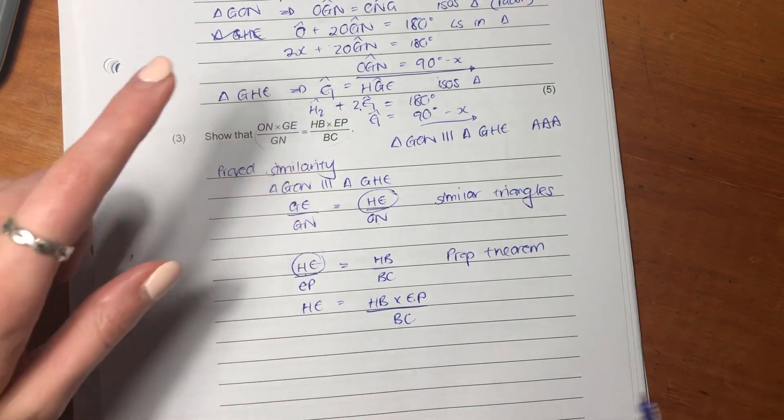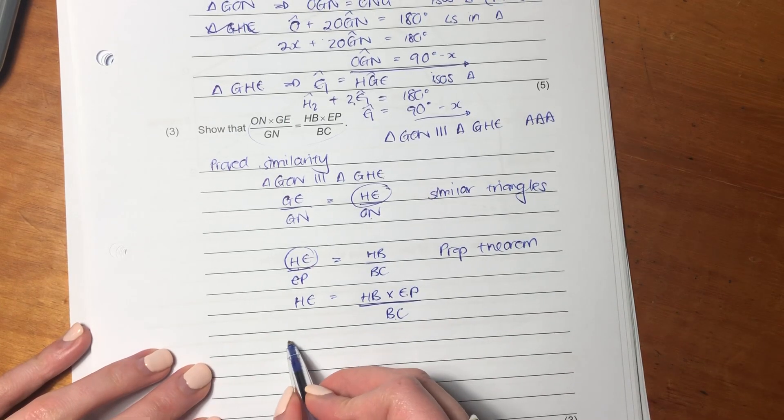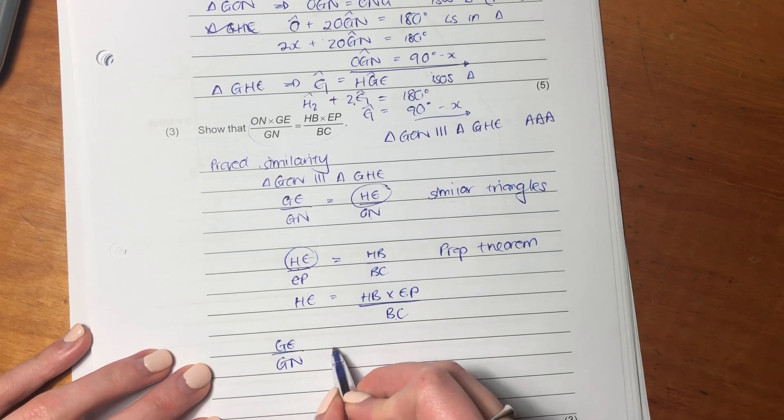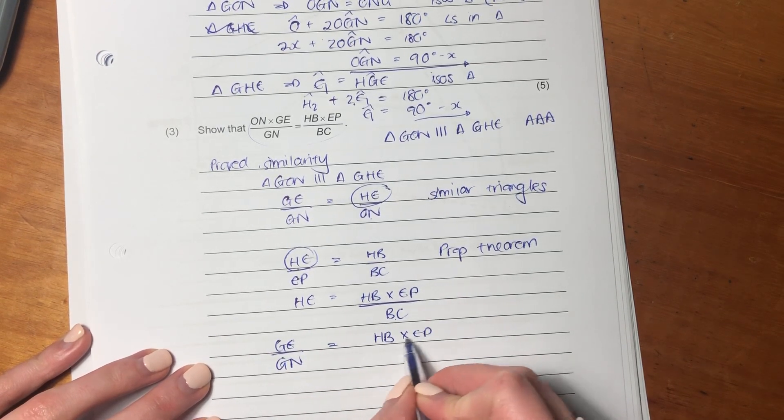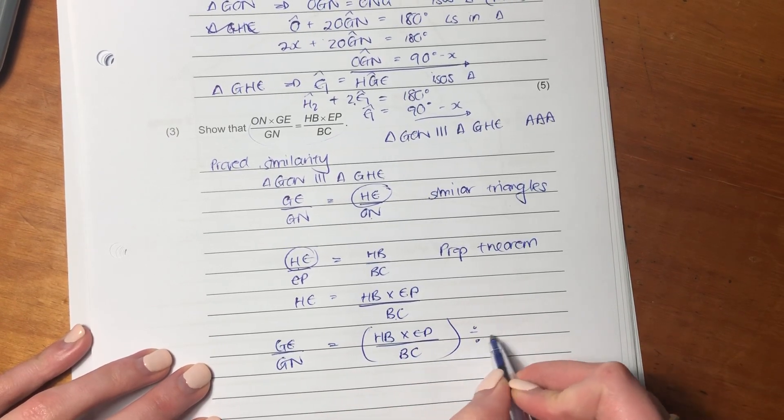That looks exactly like what we need over there. So now we have G-E over G-N equals H-B times E-P over B-C, all divided by O-N.